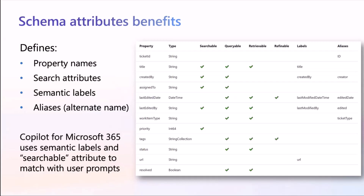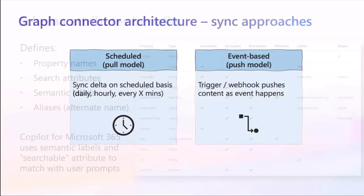This is also part of how semantic labels come in, because the LLM also needs to understand — imagine you dump a bunch of stuff inside M365, it really would not be performant to reason over everything. So it gives you the ability to label particular items, and these are the things you want the LLM to look across. We call them your semantic labels.